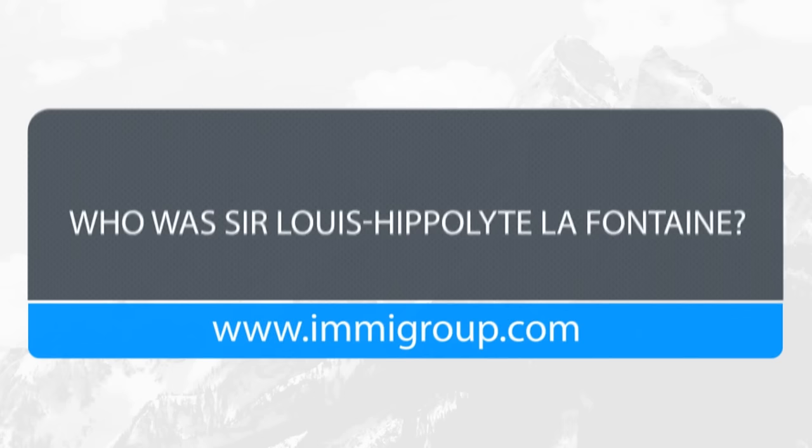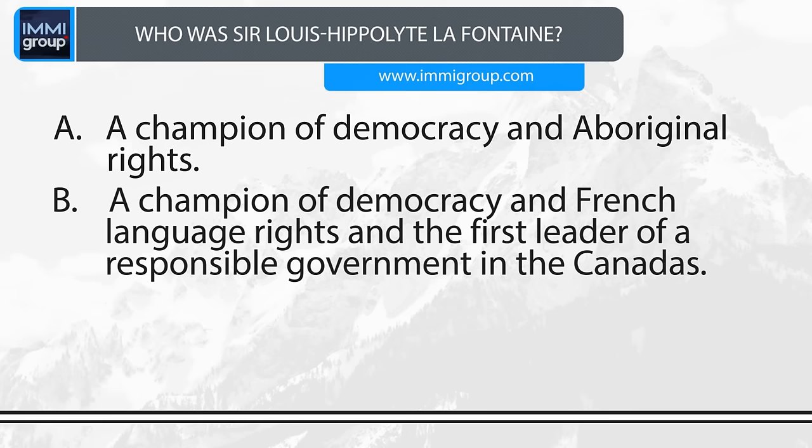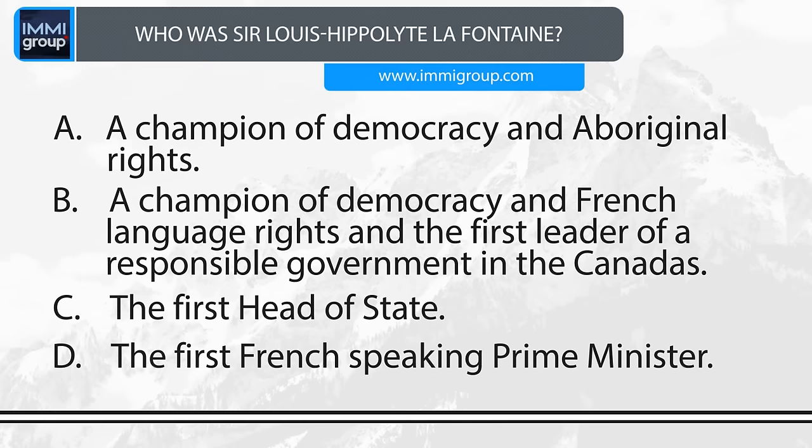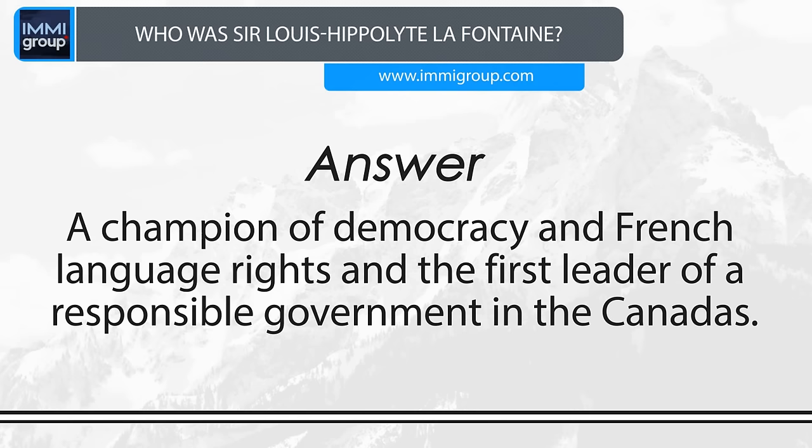Who was Sir Louis Hippolyte La Fontaine? A. A champion of democracy and Aboriginal rights. B. A champion of democracy and French language rights and the first leader of a responsible government in the Canadas. C. The first head of state. D. The first French-speaking Prime Minister. Answer: The first leader of a responsible government in the Canadas.